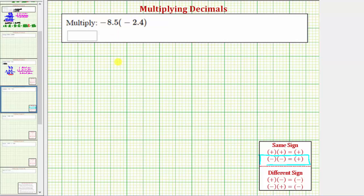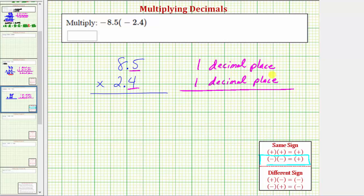Let's write that product vertically. So again, 8.5 times 2.4. Now we'll determine the number of decimal places in each decimal. 8.5 has one decimal place and so does 2.4. Again, 8.5 has one decimal place and 2.4 also has one decimal place. To determine the number of decimal places in the product, we sum the number of decimal places. Because one plus one equals two, the product must contain two decimal places.